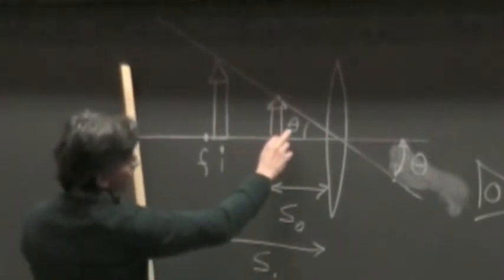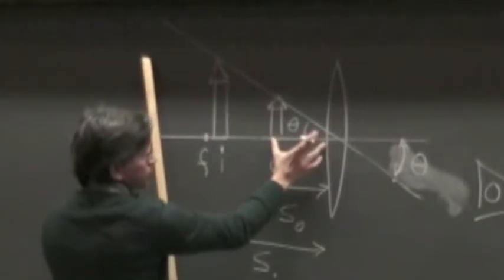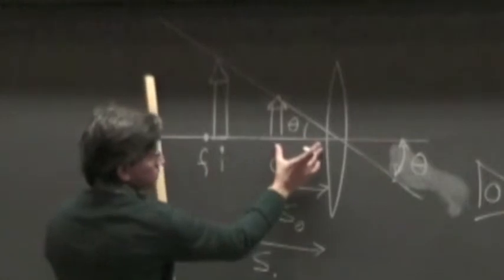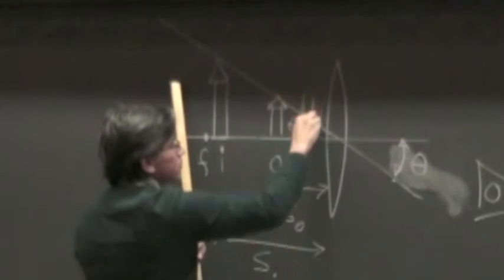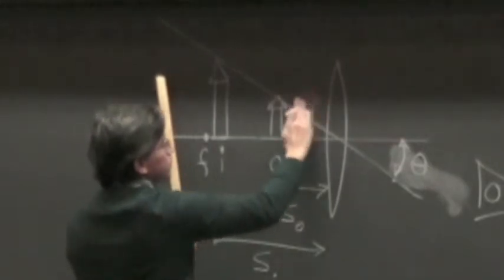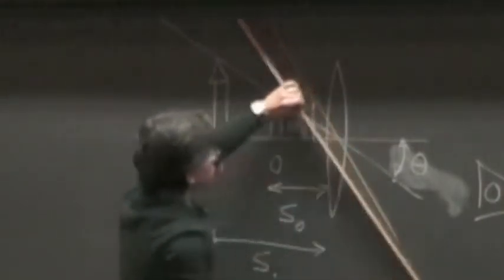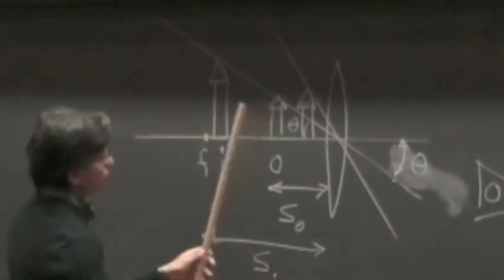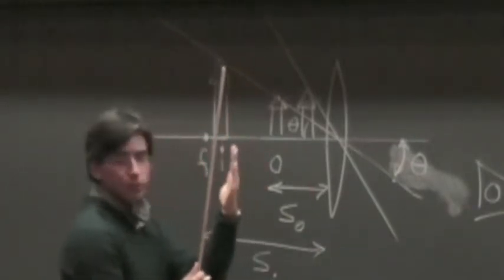Notice that the angular size actually changes because the distance between the object and the lens can change. If you bring the object closer to the lens, this distance gets shorter while the size of the object is not changing, so the angular size of the object grows. You might think it's in your best interest, when using a magnifying glass, to put the glass as close as you can to the object.